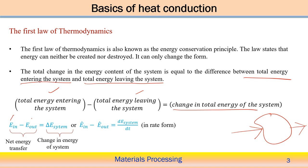Here we can see E_in minus E_out is the net energy transfer, which is equivalent to the change in energy of the system. In the rate form — that is, per unit time — we express this energy balance as: Ė_in minus Ė_out equals dE/dt, the change of energy of the system with respect to time. This is the energy conservation principle as per the first law of thermodynamics.